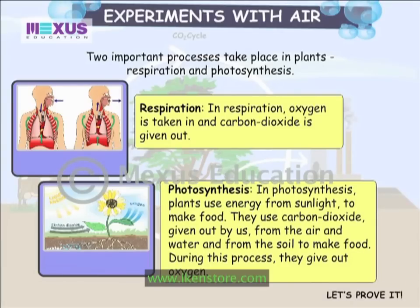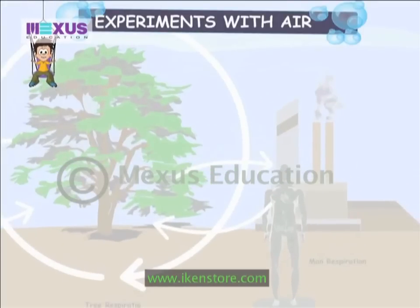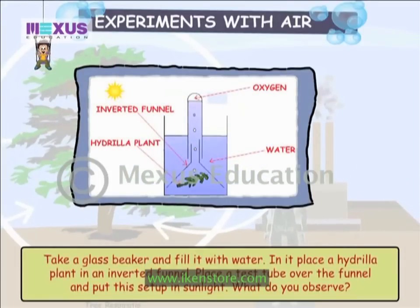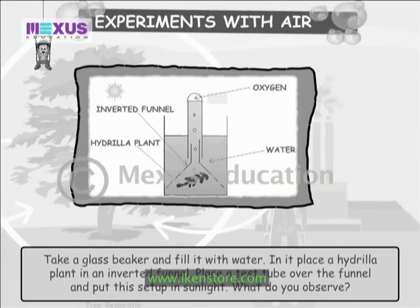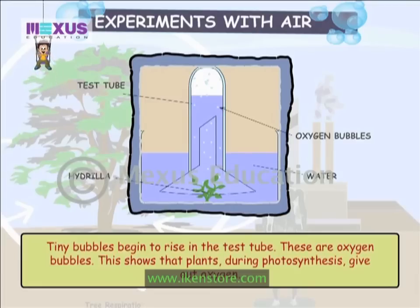Let's prove it. Take a beaker and fill it with water. In it, place a hydrilla plant in an inverted funnel. Place a test tube over the funnel and put this setup in sunlight. Tiny bubbles begin to rise in the test tube — these are oxygen bubbles. This shows that plants during photosynthesis give out oxygen.